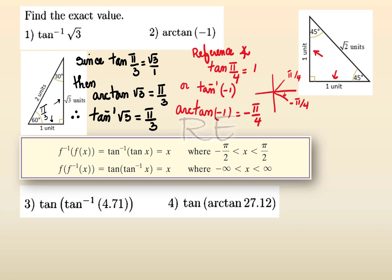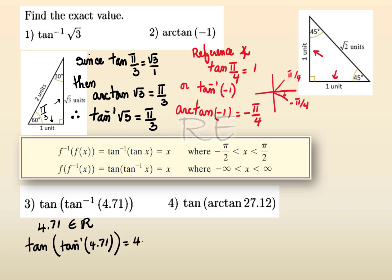When taking the composite function tan(arctan(x)), the domain can be any real number. Because 4.71 is a real number, tan(arctan(4.71)) = 4.71. Similarly, 27.12 is a real number, therefore tan(arctan(27.12)) = 27.12.